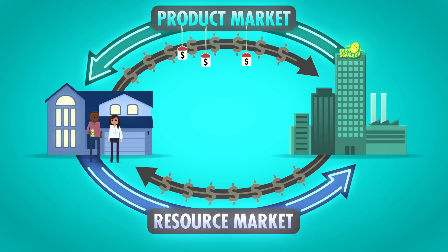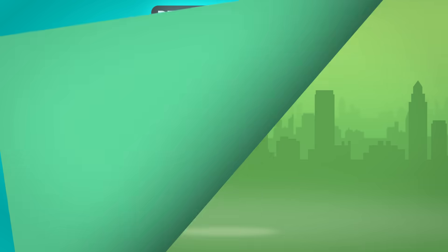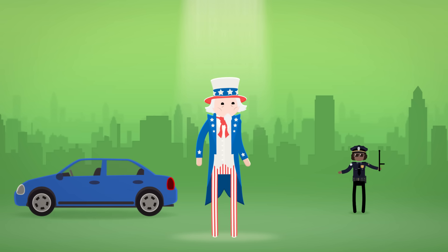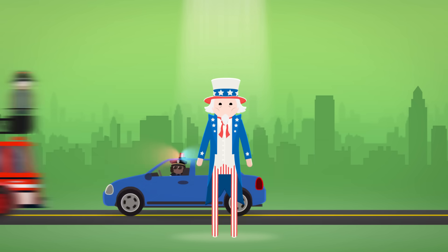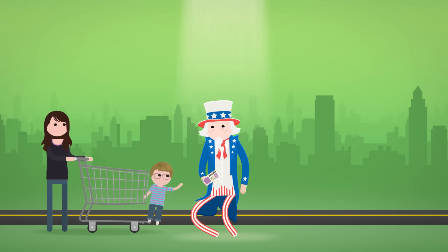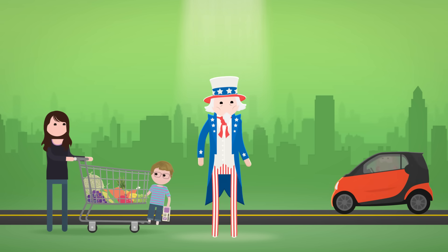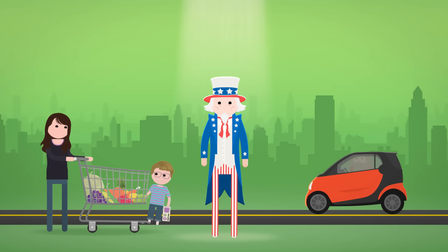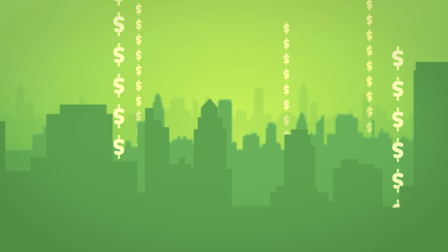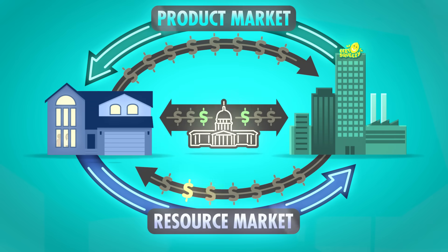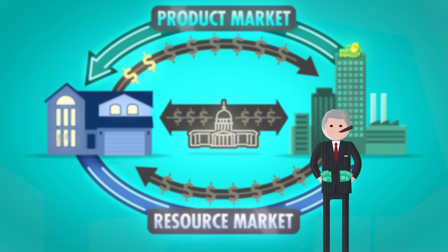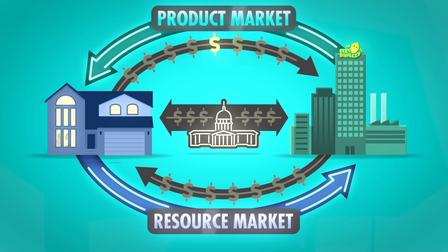The businesses use the money they earn from selling products in the product market to pay for resources in the resource market. And households use the money they earn in the resource market to buy products in the product market. But there's another key player: the government. The government buys products and resources — for example, buying cars from businesses and hiring government employees like policemen to drive them. The government pays for public goods like roads and bridges, and public services like firefighters and teachers. They also provide transfer payments to individuals in poverty and subsidies to businesses to produce things like fuel-efficient cars. The government gets money from taxing households and businesses, and from borrowing. That's the circular flow of products, resources, and money — the interactions between businesses, individuals, and the government.